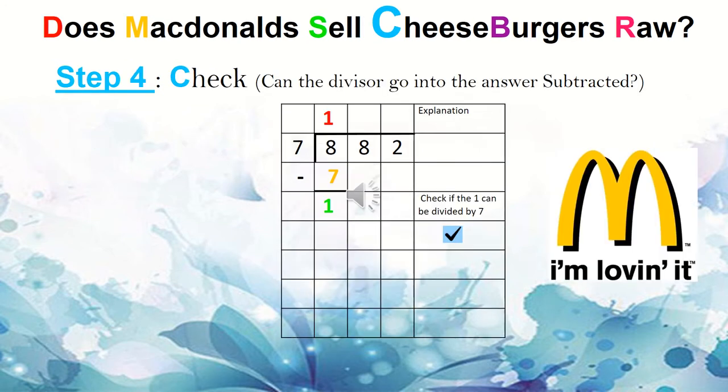Boys and girls, we have S for subtract in green. And we have the number 1 in green. Step 4, check. We need to check whether the divisor can go into the answer subtracted. So we need to check if 7, which is the divisor, can go into 1. Now we know that it cannot because 7 is bigger than 1. So if it cannot, then I can successfully move on to the next step. Checking is very important boys and girls. We mostly skip this step. But if you do the step, it will help you to complete your long division much better.